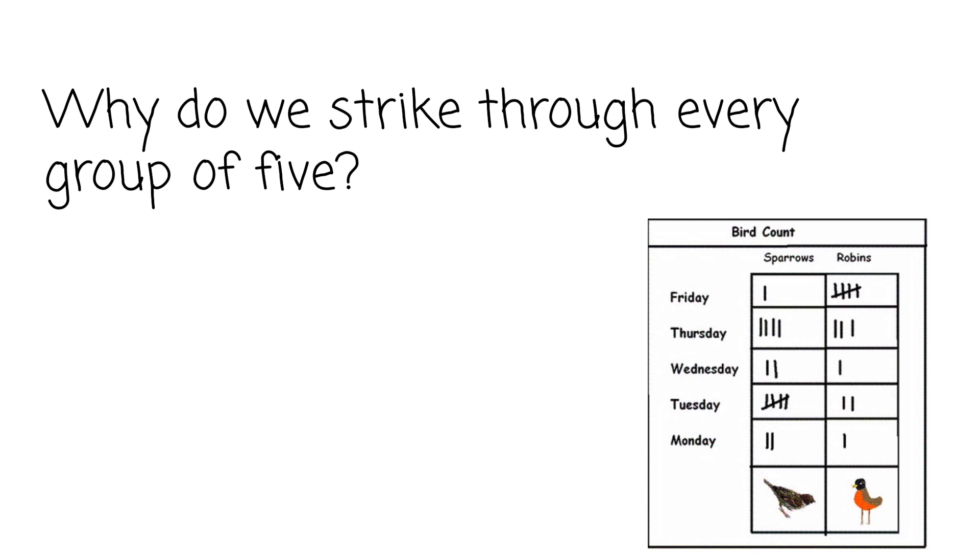Why do we strike through every group of five? So that's important with tallies. You would do four and then for the next one you do a diagonal strike through. The reason we do that is to make it easy to count up the data.